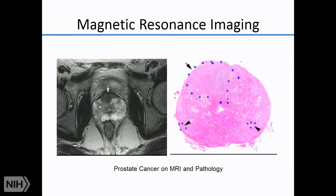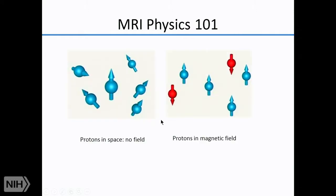Having described CT, let's move on to another cross-sectional technique called MRI — magnetic resonance imaging. This is an example of a prostate MRI with a tumor in the anterior part of the gland, validated by a radical prostatectomy specimen showing the tumor in the same location. MRI has incredible contrast resolution that enables us to resolve the tumor from normal prostate structure.